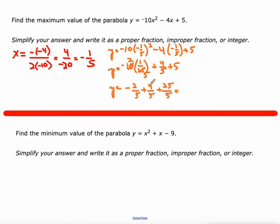So negative 2 plus 4 is 2, and 2 plus 25 is 27. 27 fifths, that would be our maximum value. So find the x value using negative b over 2a and then plug that value into the equation.